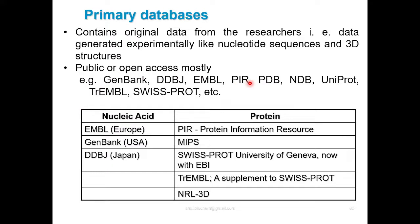Examples of databases include GenBank, DDBJ, EMBL, PIR, and PDB. These are various primary databases. EMBL, GenBank, DDBJ — these are nucleotide databases. Protein databases include PIR, MIPS, SWISSPROT, and TrEMBL, among others.